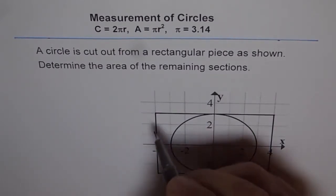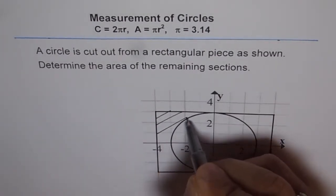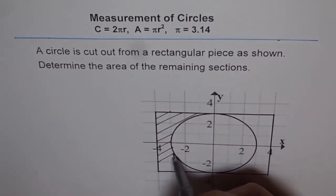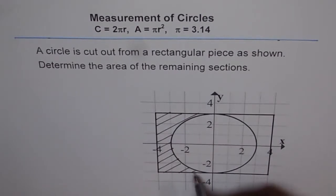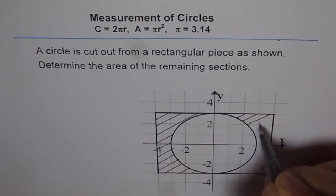The remaining area, you can shade this – this is the remaining area. We can shade this area. It is this area we are looking for. What is the area of this piece? That is what you have to figure out. How will you find it?